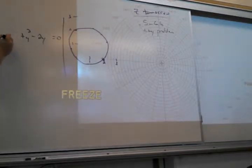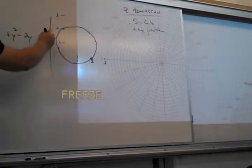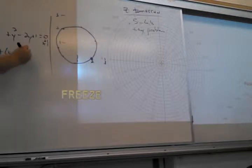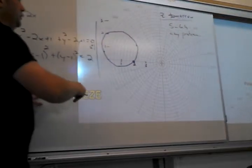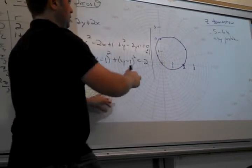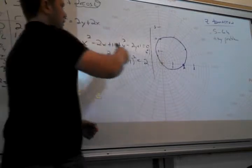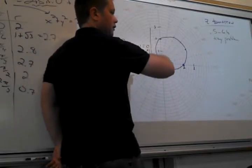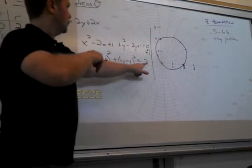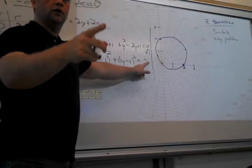Complete the square would be... subtract the 2y, subtract the 2x, put them with their partners. What do you have to put there to complete the square? Plus 1. And then here? Plus 1. So then you get x minus 1 squared plus y minus 1 squared equals 2. So you get a circle centered at 1, 1.